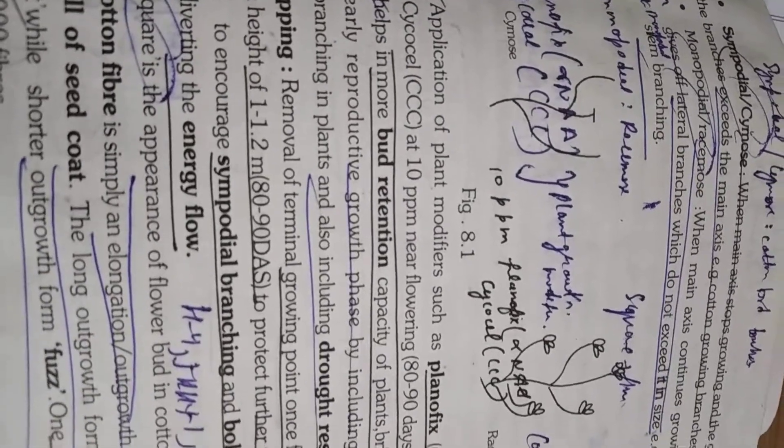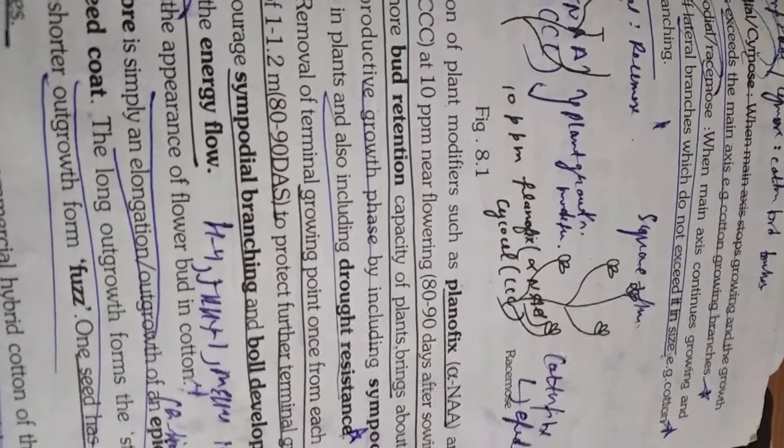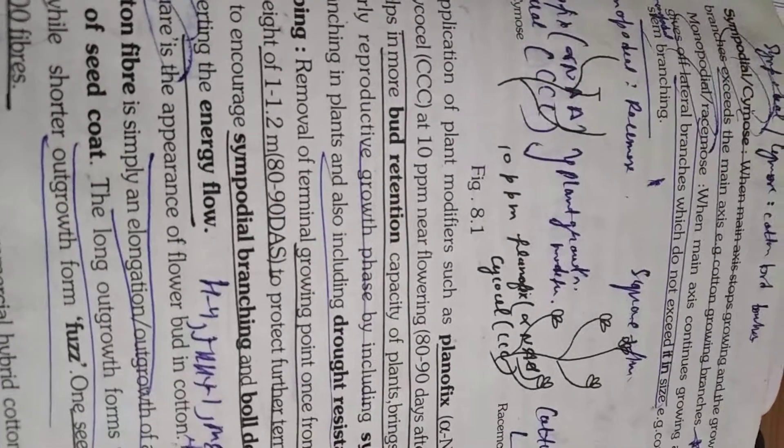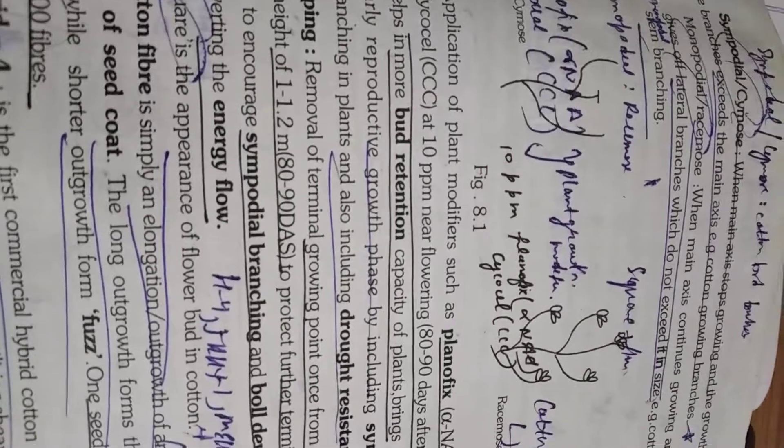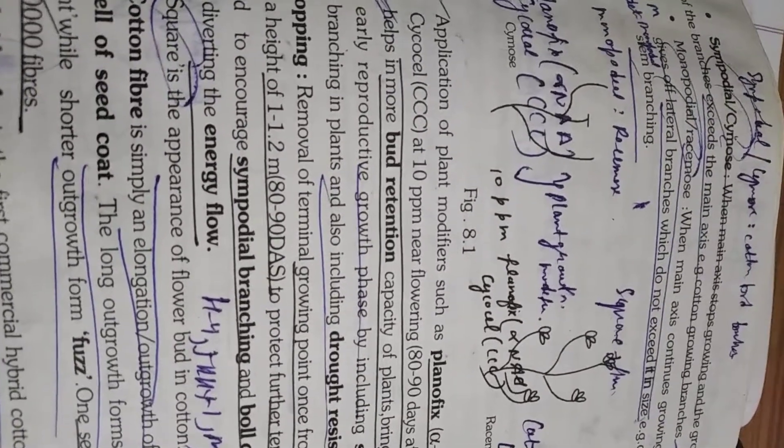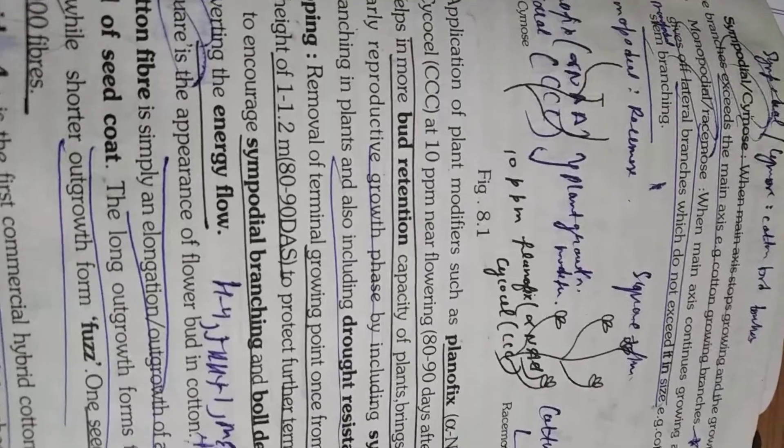And your monopodial or racemose inflorescence, when main axis continues growing and gives off lateral branches which do not exceed its size. Example cotton stem branches. These are your monopodial or racemose. Please remember.